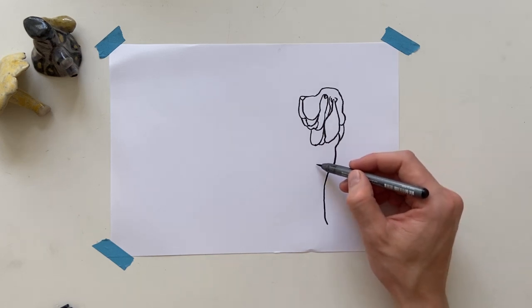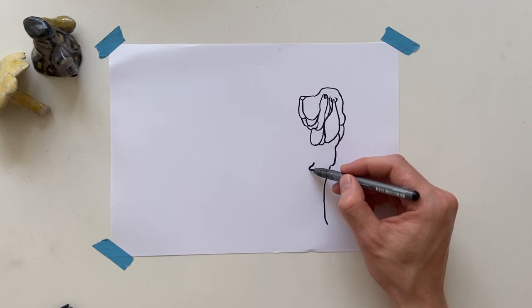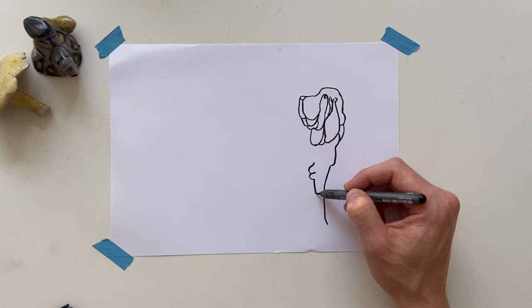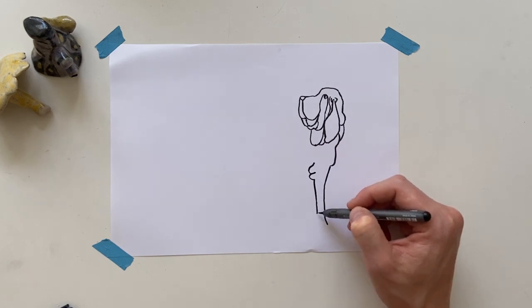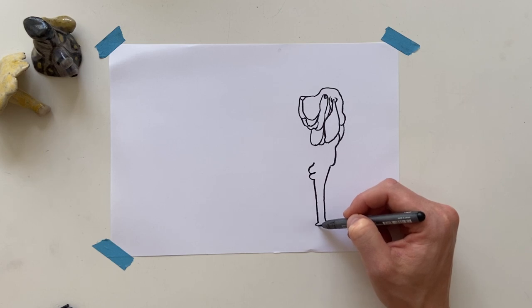We have some fluff here at the upper leg, goes down. And then out, diagonal, and down to the paw.